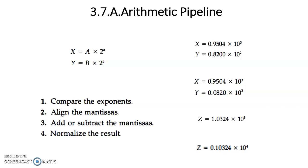Hi students. In the previous topic we have completed pipelining. Now we are going to look at arithmetic pipeline. There are two types of pipeline: arithmetic pipeline and instruction pipeline. Arithmetic pipeline is used to increase the speed of arithmetic operations, and instruction pipeline is used to increase the speed of execution of instructions. That is not in our syllabus, so we are going to discuss only arithmetic pipeline.